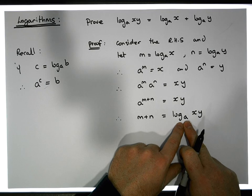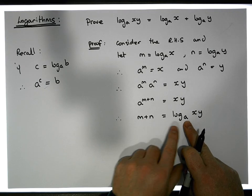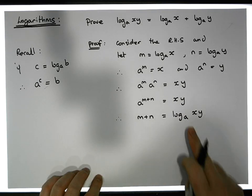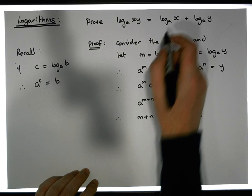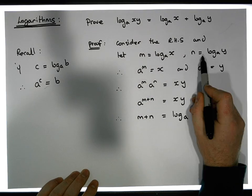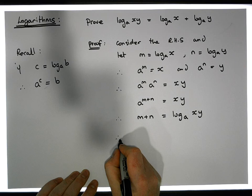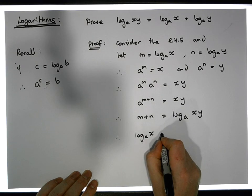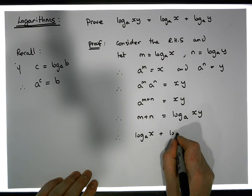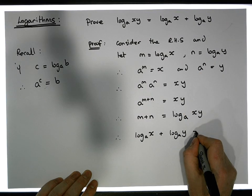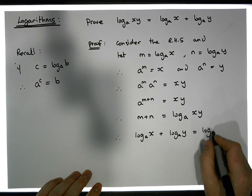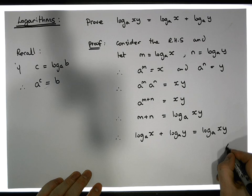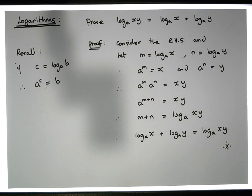So the log of xy to the base a equals m plus n. But we know that m equals log of x to the base a and n equals log of y to the base a. Therefore, log of xy to the base a equals log of x to the base a plus log of y to the base a, as required.